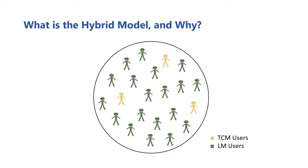Based on this need, the hybrid model is very simply defined as allowing a combination of the trusted curator model and the local model. That is, if there's some group of users, no matter how small, who are willing to trust the curator, they can opt into the trusted curator model. We refer to them as the TCM group of users. The remaining users that don't trust the curator will use the local model, and we refer to them as the LM group of users.